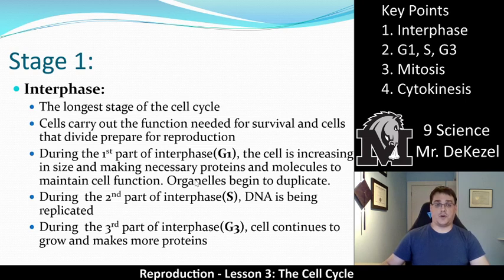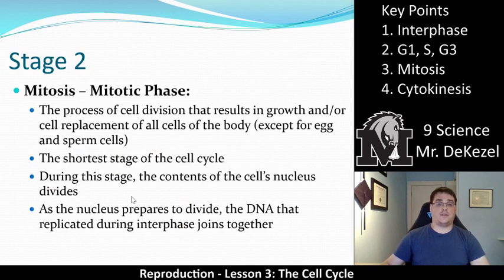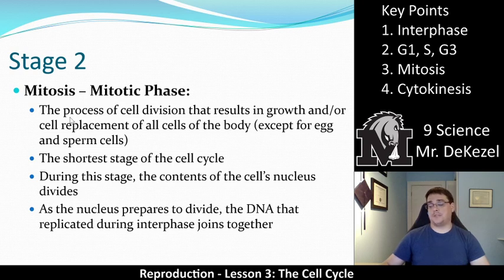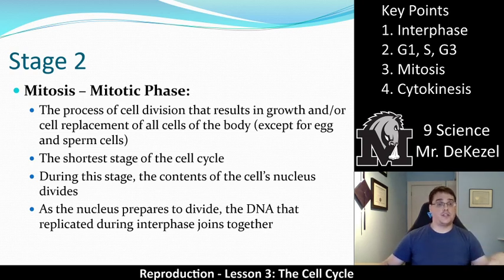That is the somewhat routine part of the cell cycle — the longest part. But we get to the fun part: the mitotic phase, which consists of mitosis and cytokinesis. Mitosis is the process of cell division that results in growth or cell replacement, and it applies to all body cells. This is what's happening in your cheek cells, on your skin, replacing cells you might lose when you scratch yourself, get a cut, bite your cheek, or when they naturally fall off. You need to replace those cells — that is what happens during mitosis.